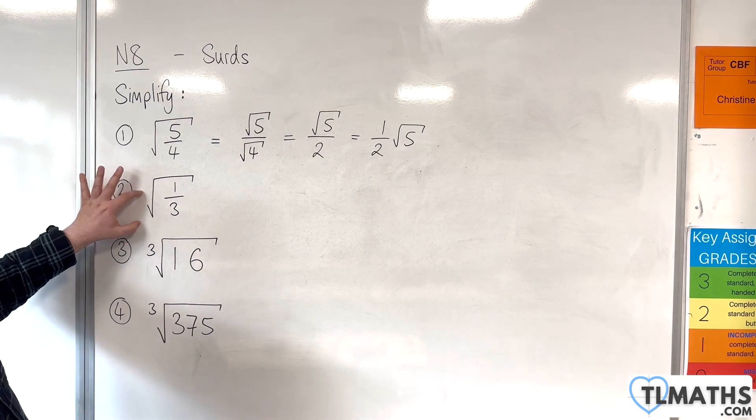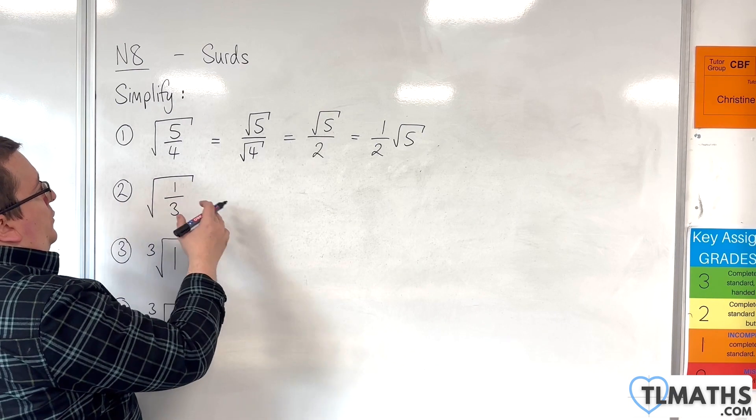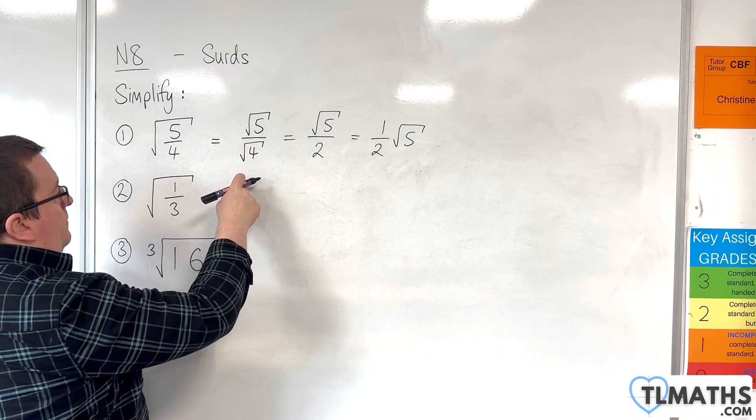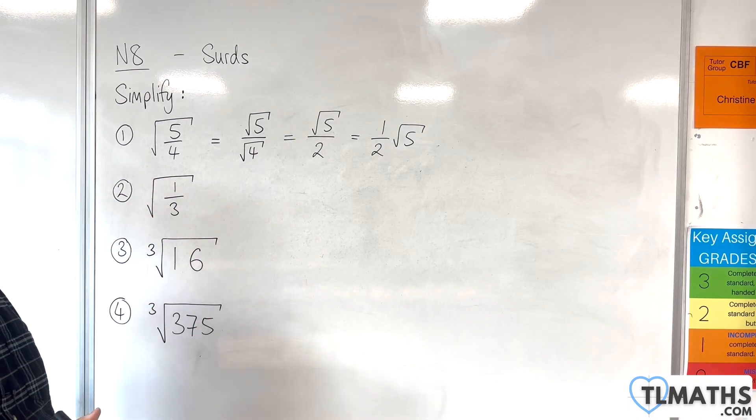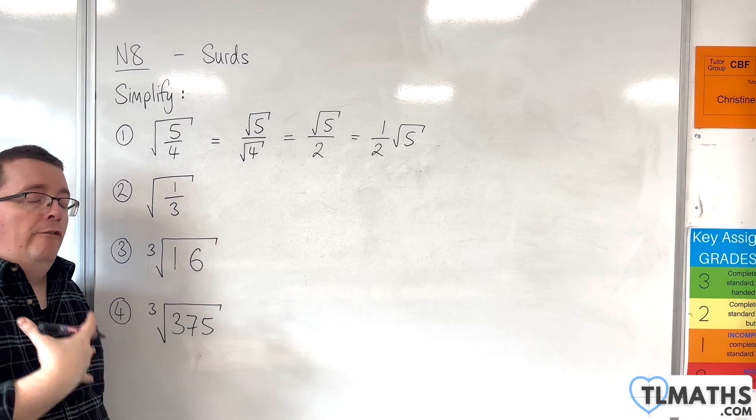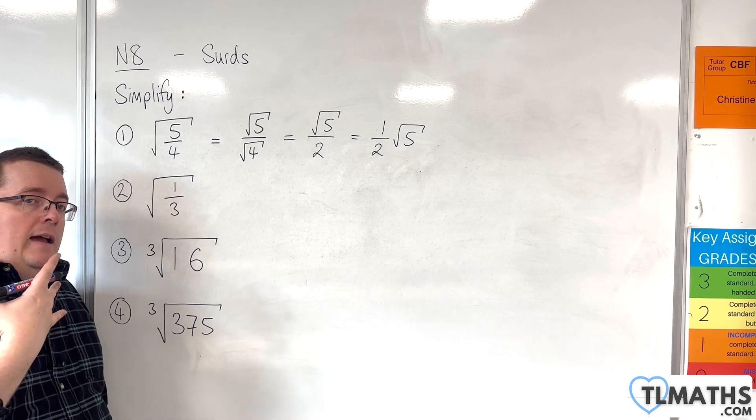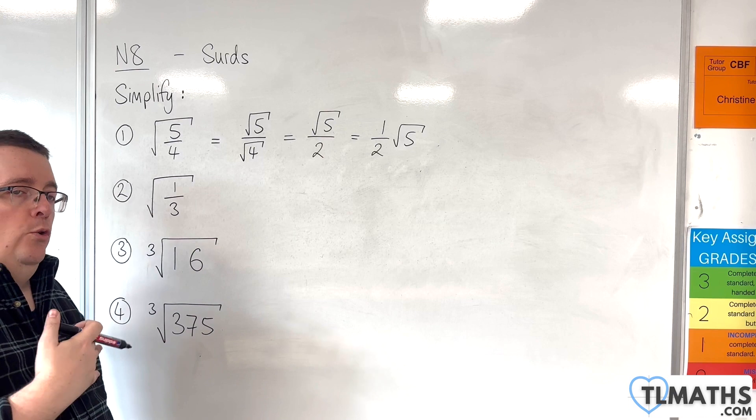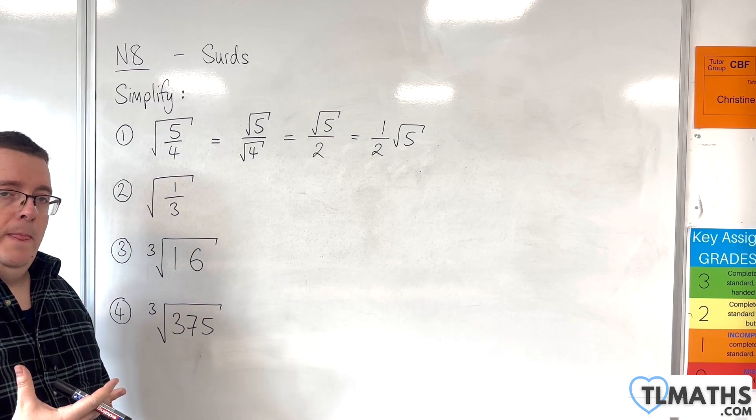Now, number 2, we have the square root of 1 third. Now, yes, we can write that as the square root of 1 over the square root of 3. But, in order to simplify that, we go through a process of rationalising the denominator. And, we'll see how to do that in the videos coming up. So, instead of doing that, I'm going to show you a slightly different approach.